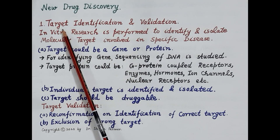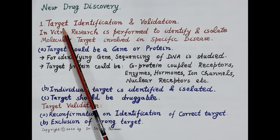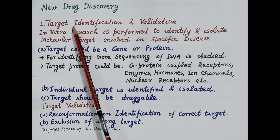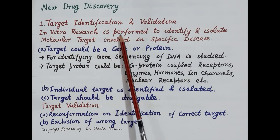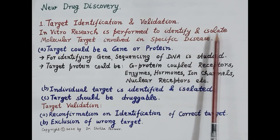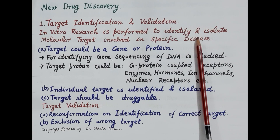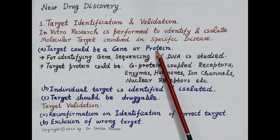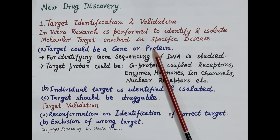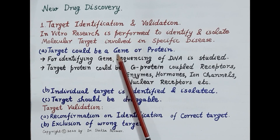The first step in new drug discovery is target identification and validation. A target involved in a specific disease is identified whose functioning could be modified by a new drug to produce a therapeutic effect. In vitro research is performed to identify and isolate the molecular target involved in the specific disease. This target could be a gene or a protein regulating a signal transduction pathway within a cell responsible for cellular action.